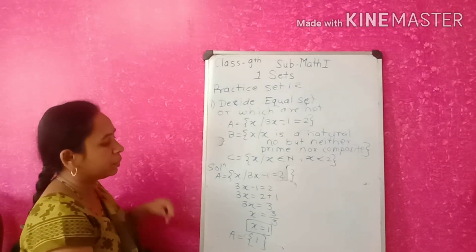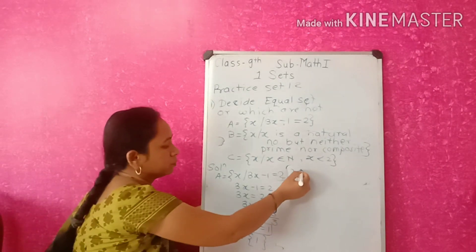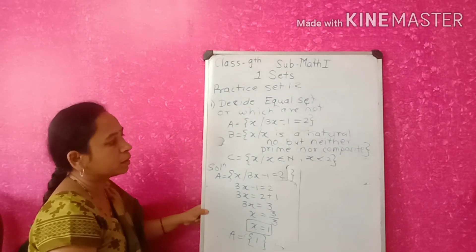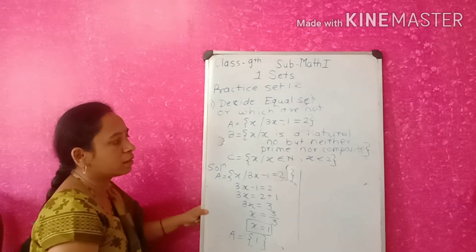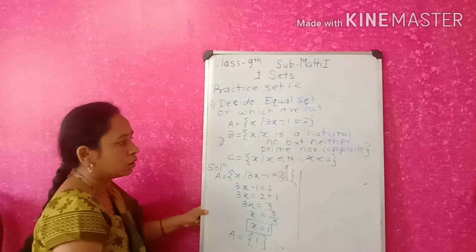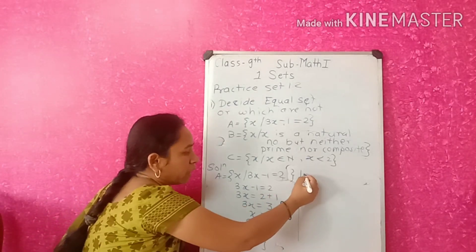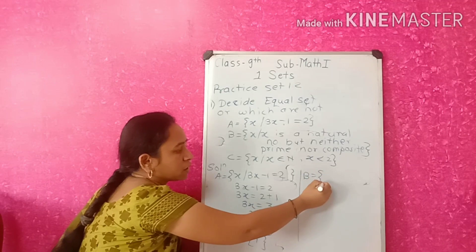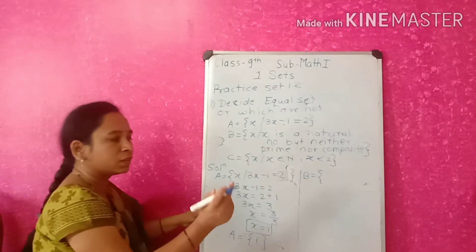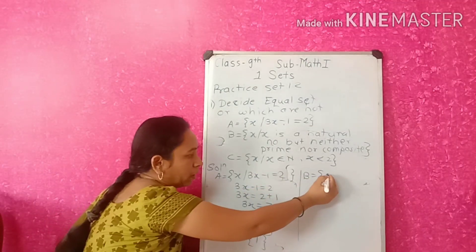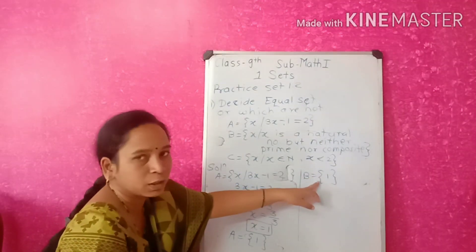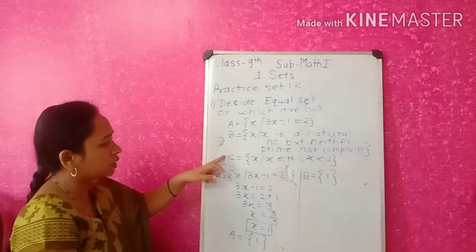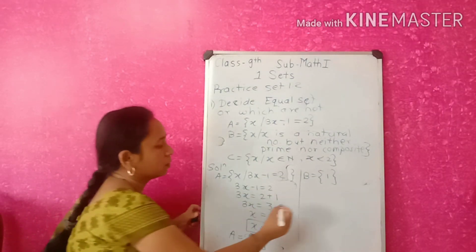Now for set B: x is a natural number but neither prime nor composite. As we have studied, 1 is the only natural number that is neither prime nor composite. So B equals {1}, and A is also equal to {1}.